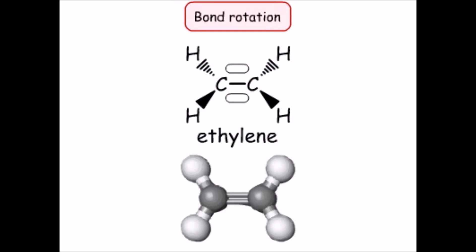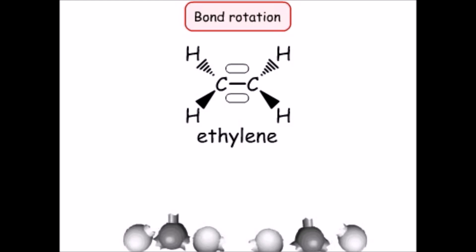If two or more bonds are present, free rotation is not possible. Rotation about a double bond, such as the carbon-carbon bond in ethylene, will not happen unless the pi bond is first broken. The pi bond thus prevents the bond rotation between two atoms that are multiply bonded.